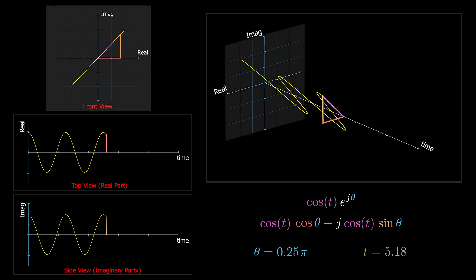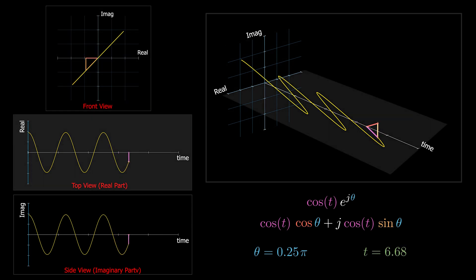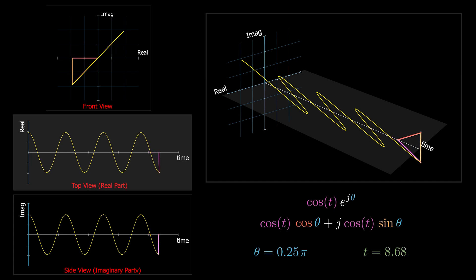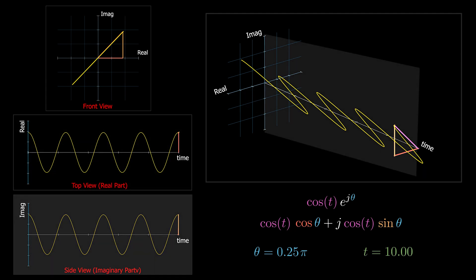The front view shows the vector in the complex plane. The top view shows the projection of the magnitude variation on the real axis — the variation of the real component of the vector with respect to time. The side view shows the projection of the magnitude variation on the imaginary axis — the variation of the imaginary component with respect to time.